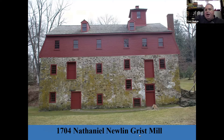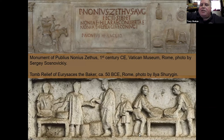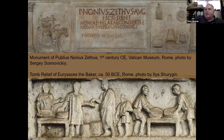That kind of ends the technology overview. This is my mill in particular — a 1704 Nathaniel Newland Grist Mill that has operated all but 20 years since it was built. When we started furnishing it for our furnishing plan, we went backward. To understand the early colonial history, we started in the classical world — going all the way back to the Greeks and Romans.